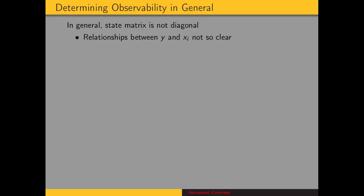In general, the state matrix is not diagonal. And so these relationships between the output and the state variables, y and x sub i, are not so clear as in the preceding examples.